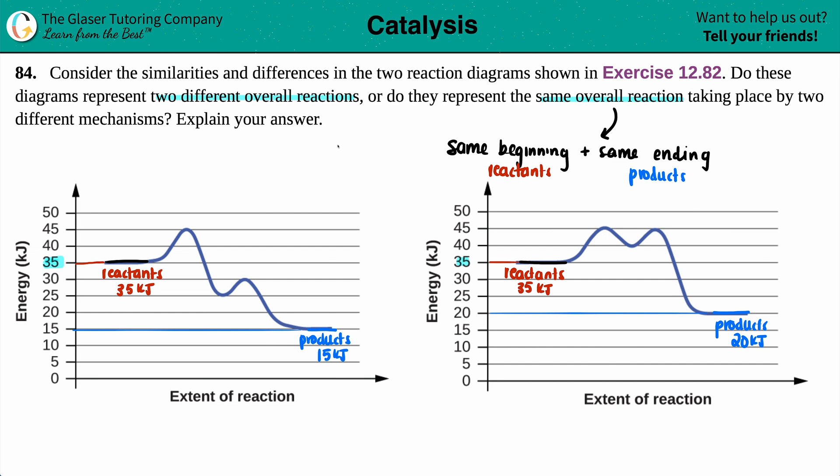So because of that, we know that we have two different reactions. Explain our answer: We have two different reactions because the product energies are different.